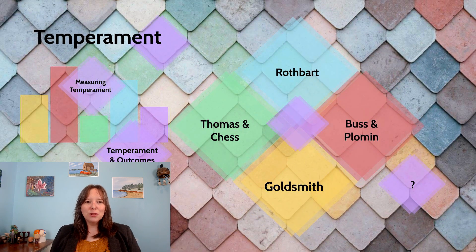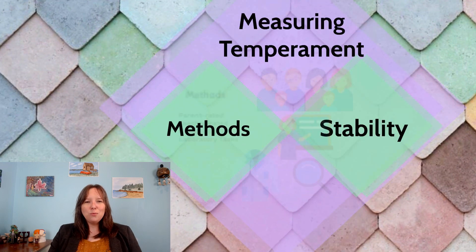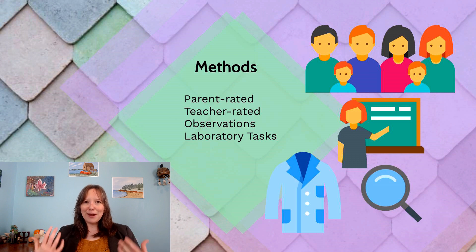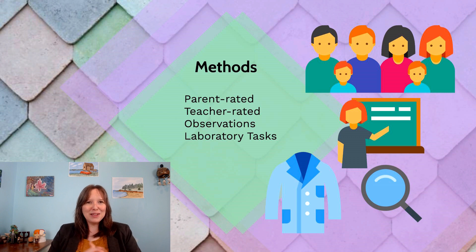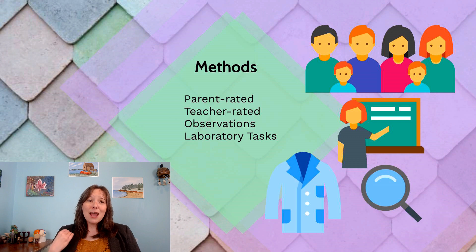Regardless of which of these four areas of temperament we're looking at, we tend to find there's a lot of overlap in how we measure temperament. When we actually want to measure temperament in infants and in children, the bulk of the research tends to rely on parent-rated measures or teacher-rated measures — you give parents a survey asking about the emotionality, activity, surgency, or sensitivity of their children. When it comes to parent-rated measures, there are some pros: they're very inexpensive and we can get lots more kids in our sample.